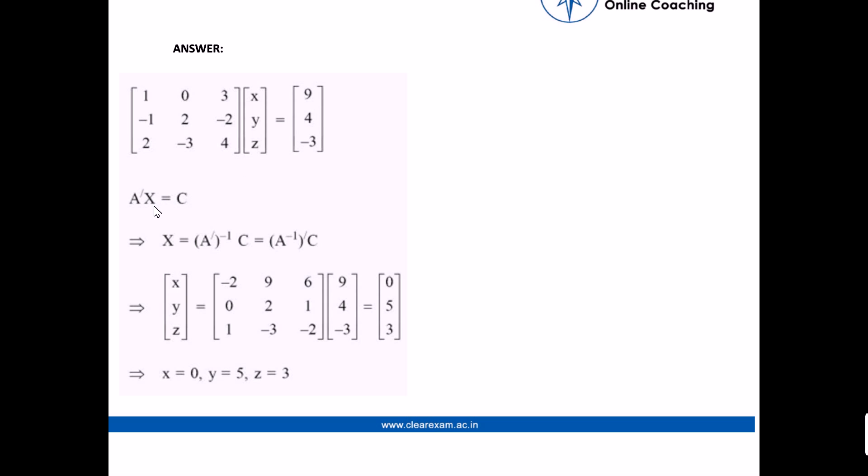In matrix form AX = C, we can write X = A inverse times C. So we have [x; y; z] = [-2, 0, 1; 9, 2, -3; 6, 1, -2]